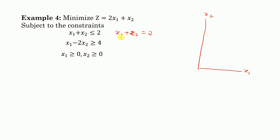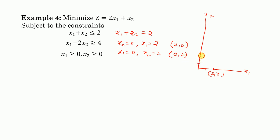To draw this line, we find where it crosses each axis. Putting x2 = 0 gives x1 = 2, so one point is (2, 0). Putting x1 = 0 gives x2 = 2, so another point is (0, 2). We draw the line by joining these two points.